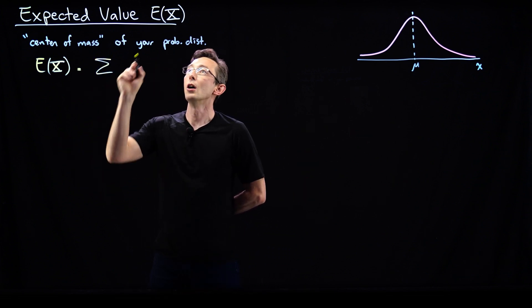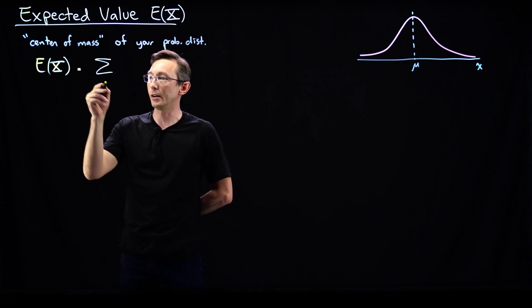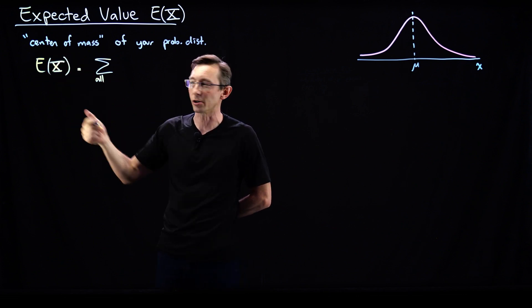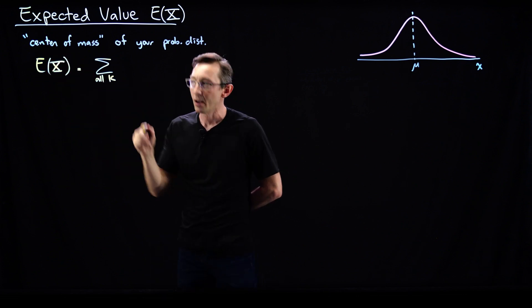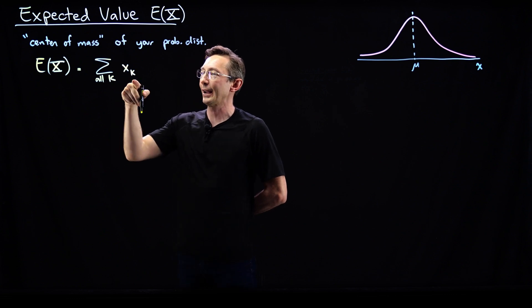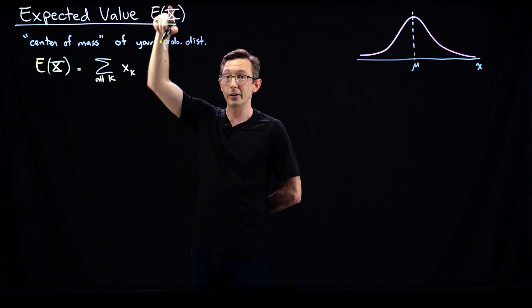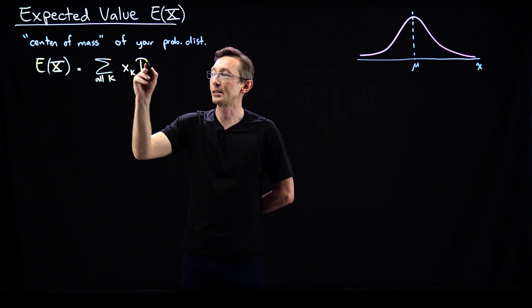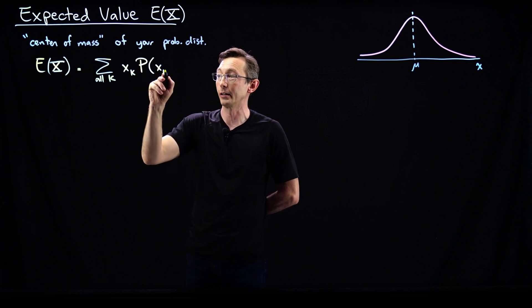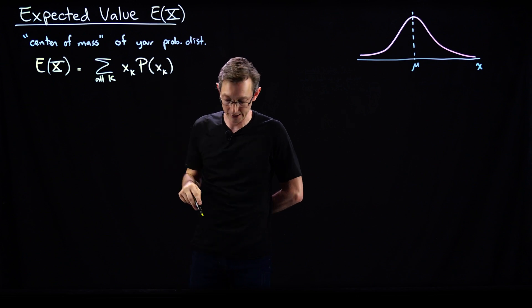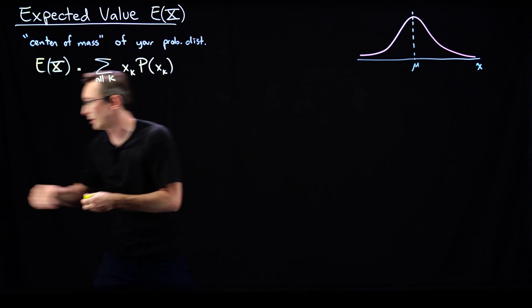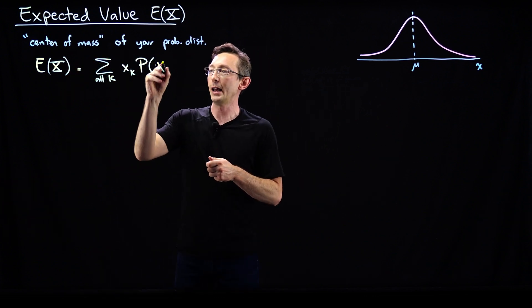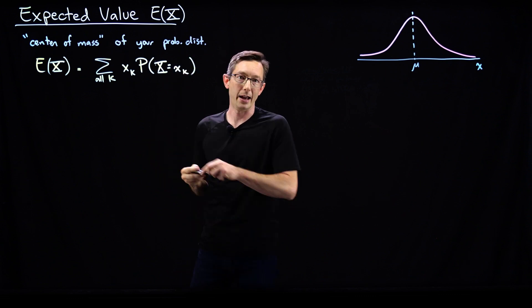We're going to sum over all of the possible values this variable can take on. Generally these are going to be integers, so I'll say sum over all k. The value x_k that this random variable could take on — adding up the actual value of my random variable — times the probability of x equaling that specific value x_k. So this is literally just a weighted average of all of the values x_k that my random variable could take on.